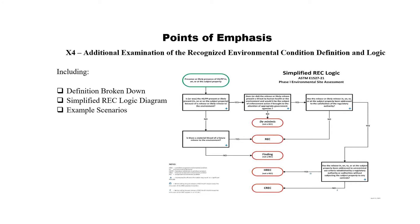With regards to one of the appendices, we've really nailed down with a logic scheme how you determine REC or no REC. We've also put in example scenarios — I think 13 of them — with examples of a REC, HREC, CREC, and de minimis condition. Finally, we've also put some effort into breaking down the REC definition itself into more singular elements to help provide more direction and clarity to what is the most important aspect of a phase one. This is all now in Appendix 4 and should go a long way toward bringing consistency within the field regarding REC and no-REC determinations.